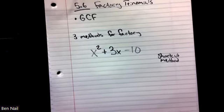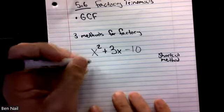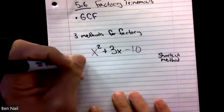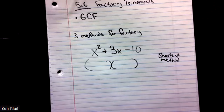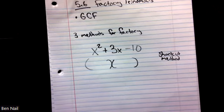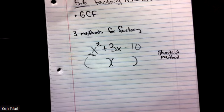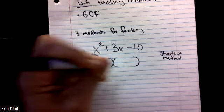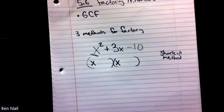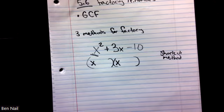If there's no number in front of your squared term, we can factor this by what I call the shortcut method. Basically, part of this problem is done for you. Factoring is un-distributing — we're trying to break this problem apart. To do so, we've got to figure out what we can multiply to get x squared, and the only thing that works is x and x. Because we only have that one option, that makes this relatively easy.